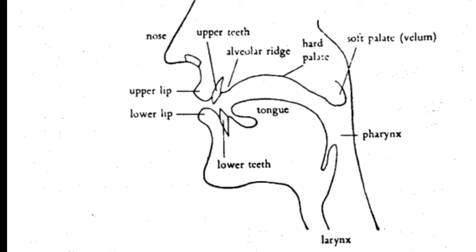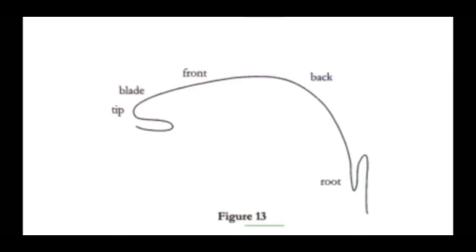Look at the figure for the names and places of articulators. We will focus on these articulators when we discuss the place of articulation. One important articulator is the tongue, which has five parts: tip, blade, front, back, and root. These parts of the tongue are very important in the production of many consonant sounds.